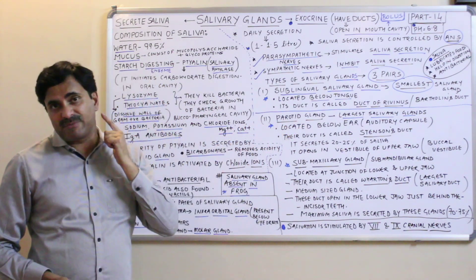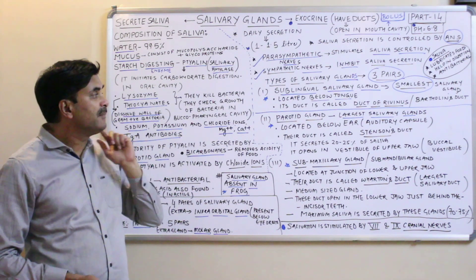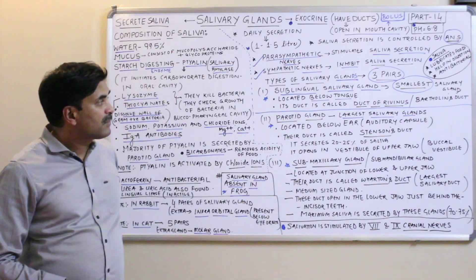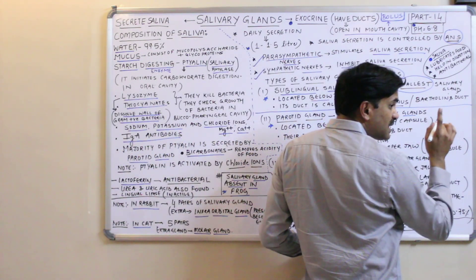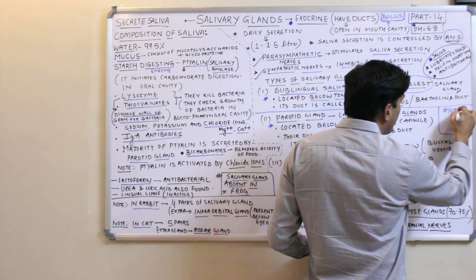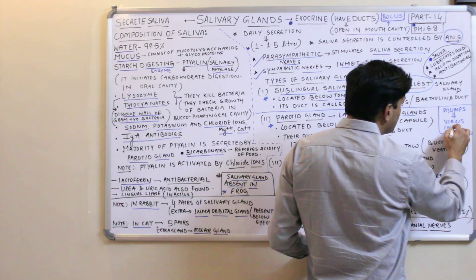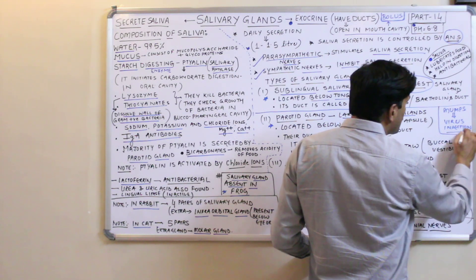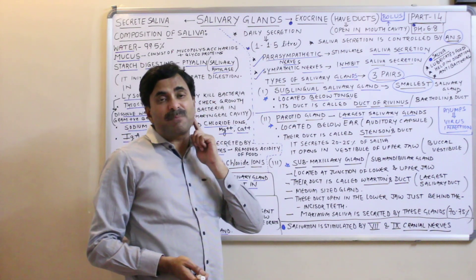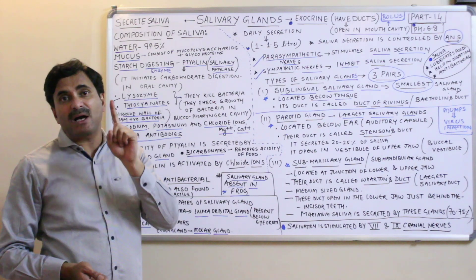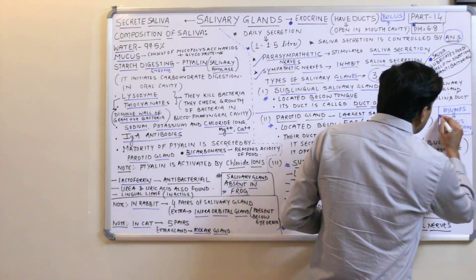The parotid gland is present below and in front of the ear, at the auditory capsule. Sometimes the parotid gland swells, causing mumps — a viral infection caused by paramyxovirus. Because of this infection, the parotid gland swells and mumps are caused.